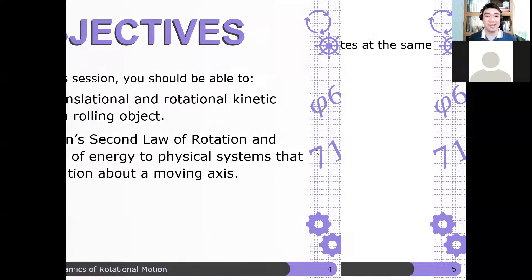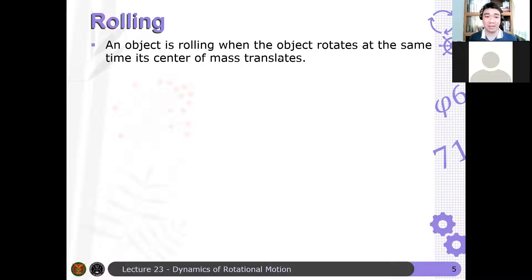An object is rolling when it rotates and at the same time its center of mass translates. So there are two motions: the object is rotating — therefore we need rotational kinetic energy and the torque equation — and at the same time the center of mass is translating. Two motions are happening with the object.